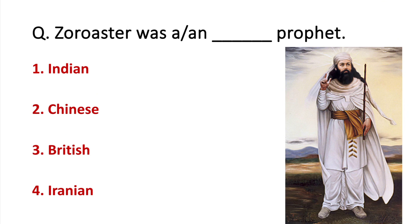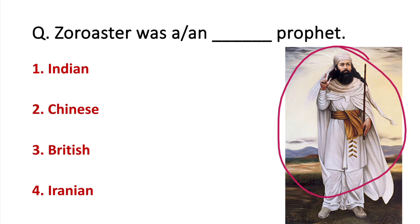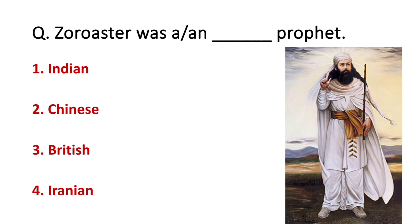Zoroaster was a Persian prophet. He is associated with Iran, and the term refers to the God of Iran.